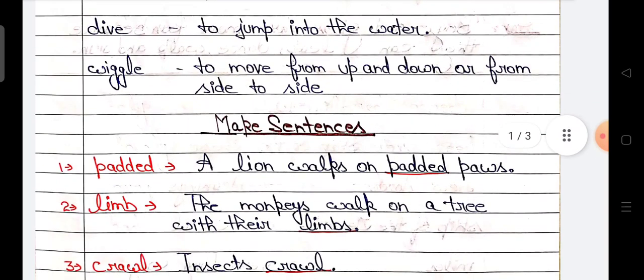Next word is dive. Dive means to jump into the water. And last word is wiggle - to move from up and down or from side to side. Next we will make sentences of the same words.